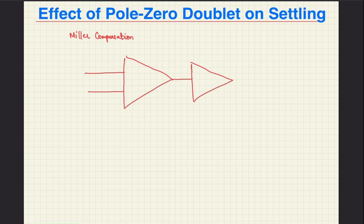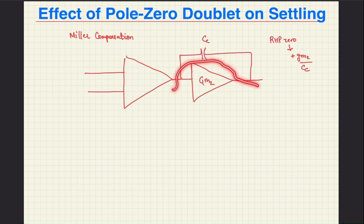Additionally, you'd know about the RHP zero that manifests itself due to the feedforward path through the Miller capacitor. Not just that, but the addition of a zero nullifying resistor in series with the Miller capacitor helps to ameliorate this issue by moving the zero to the left half plane and perhaps cancelling one of the poles and even probably yielding a phase margin or a phase gain to say.